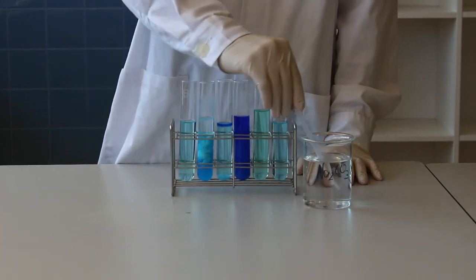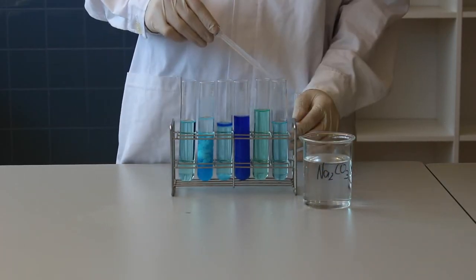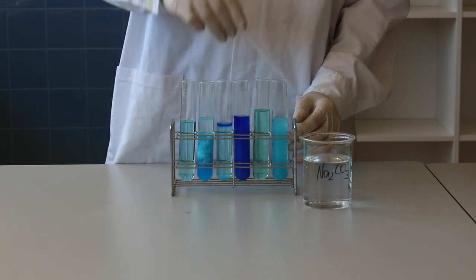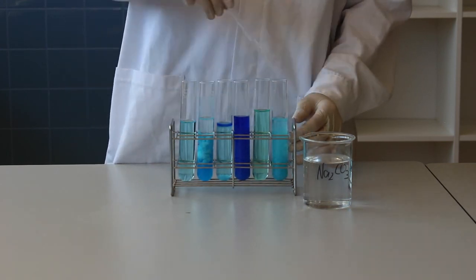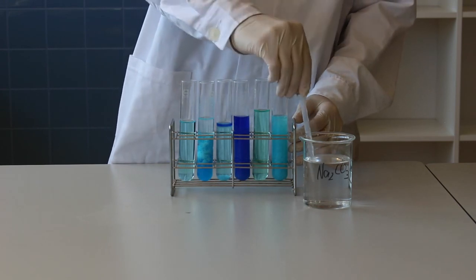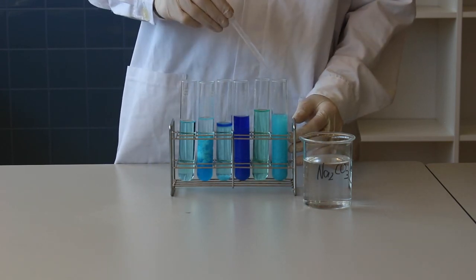And now we add sodium carbonate. Carbonate ions will simply give you a precipitate that you can think of as copper carbonate. The carbonate ions will create a light blue precipitate.